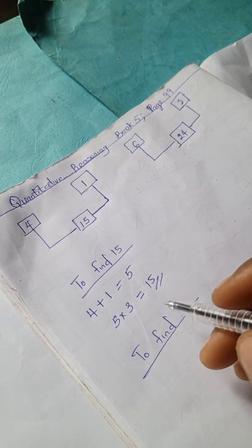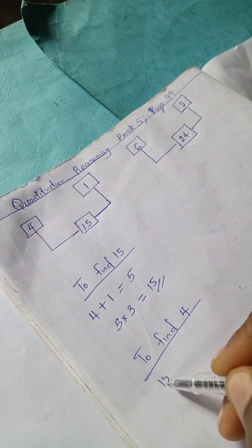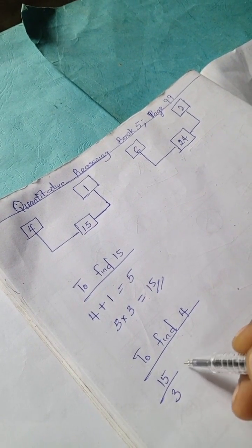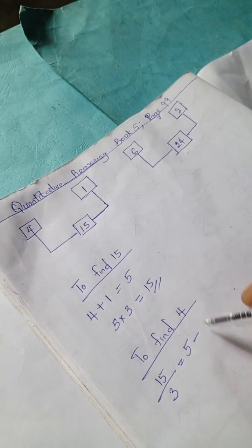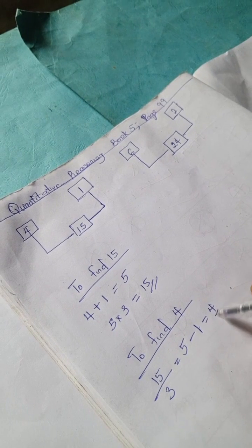To find 4, we're going to have 15 divided by the imaginary 3 equals 5. 5 minus this 1 equals 4.